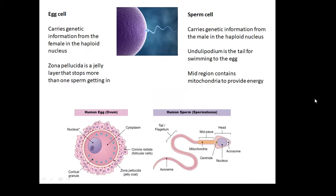Some animal cells now. Egg cells and sperm cells. The egg cells carry the genetic information from the female in the haploid nucleus. If we're talking humans, then you're talking 13 chromosomes from your mum. There are different bits of it if you look at the diagram. The zona pellucida is a jelly layer that stops more than one sperm getting in.